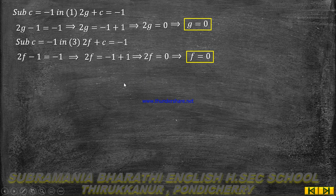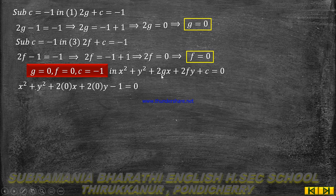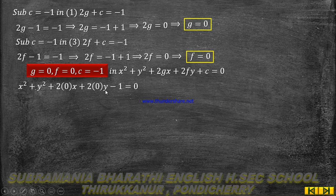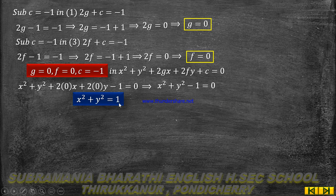We have found g, f, and c. Substituting into the general equation: x squared plus y squared plus 2 into 0 times x plus 2 into 0 times y plus (minus 1) equal to 0. The middle terms vanish, giving x squared plus y squared minus 1 equal to 0. Therefore, the required equation of the circle is x squared plus y squared equal to 1.